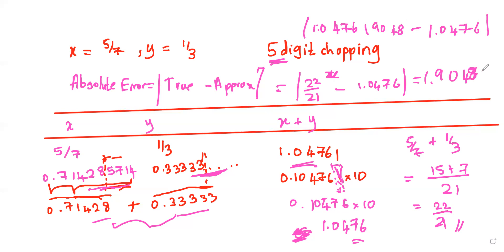So if we approximate, the absolute error is approximately 8 × 10⁻⁵. This is the absolute error of this calculation — it's relatively very small, so you can use this calculator without a big problem.